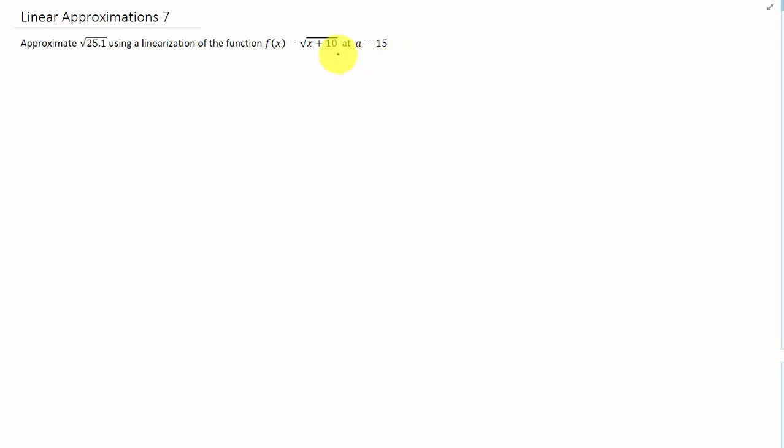Something that might be important to point out right off the bat is that when x is 15.1, f of 15.1 is the square root of 25.1, which is the exact value we're trying to approximate. Let's keep that in mind when finishing this problem, but we are given specific instructions to find the linearization of this function at a equals 15.